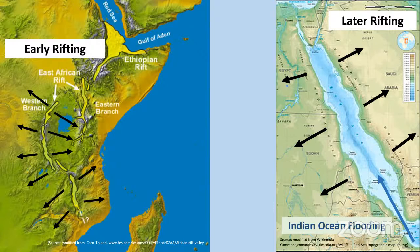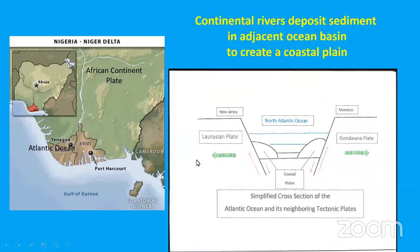Once the rift spreads far enough apart and gets deeper into the earth, it gets flooded by the sea. Here we have the Red Sea, where this has happened — the African plate and the Arabian plates are splitting and water is flowing in between them. The sediment coming off the plates — here's the African plate in Nigeria today — the Niger River takes all the sediment eroded from the continent and dumps it into the Niger Delta. All of that sediment forming the bulge in the sea is what we would call coastal plain.